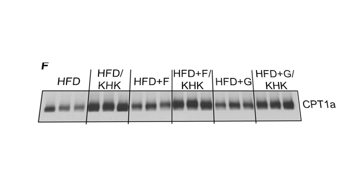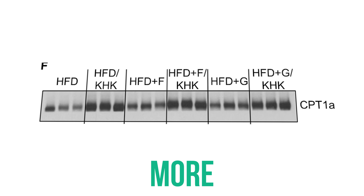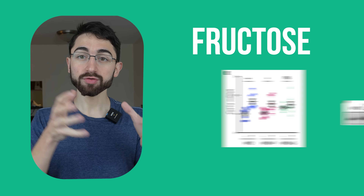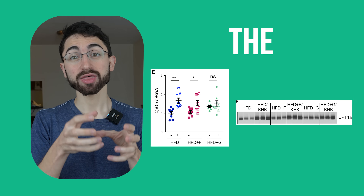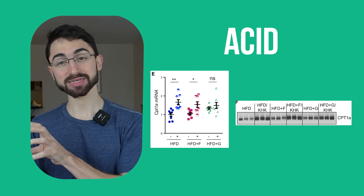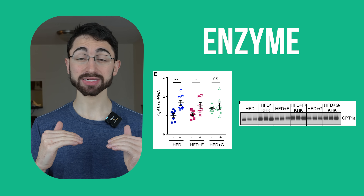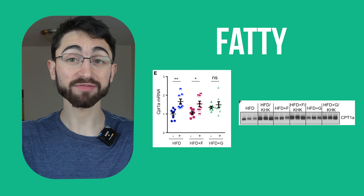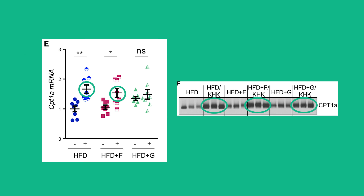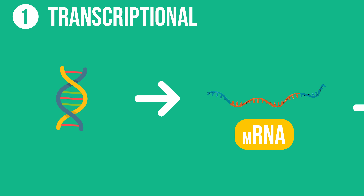It's important to check if this change in mRNA actually changes the protein levels downstream. So what they then did is something called a Western blot. Basically, what you're looking at is: thicker means more protein. And again, what you see is when you knock out ketohexokinase, there is more CPT1A protein. Summary point: fructose metabolism is important in regulating the rate-limiting enzyme in fatty acid burning. When you have more fructose metabolism, there is less fatty acid burning enzyme; when you knock out fructose metabolism, you boost fatty acid burning. So that's part one, transcriptional.